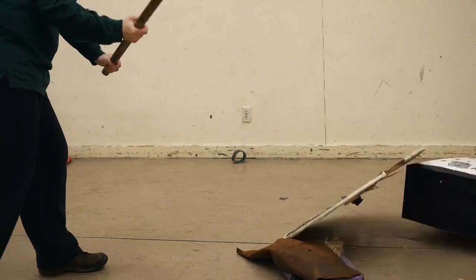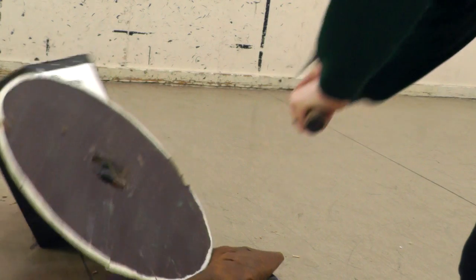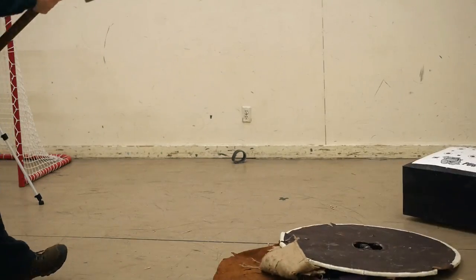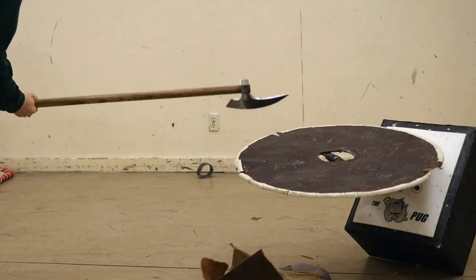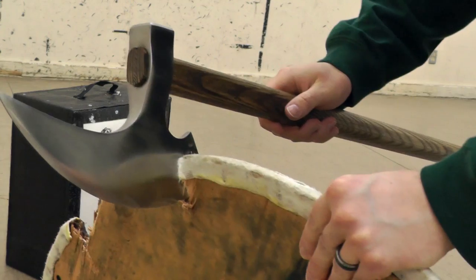Attacks to the face of the shield do very little, at least with these types of weapons. It actually did less than I expected with an axe like this. Over time, this would definitely batter the shield.